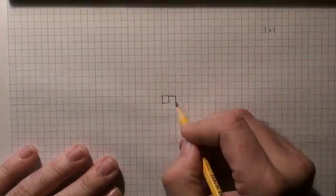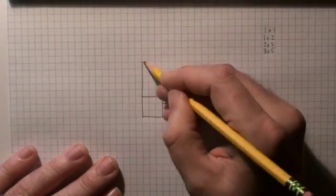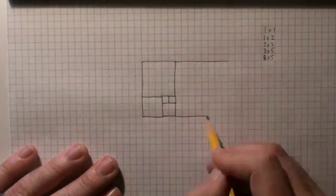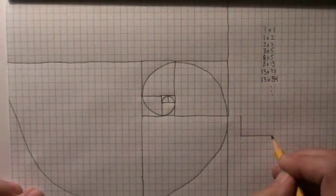Now instead of breadth, you decide to go for depth. Making the rectangles very long or very tall is too boring, so you add one square each time, alternately making it longer and taller. One, one, two, three, five, eight, thirteen, twenty-one. You get the Fibonacci numbers.